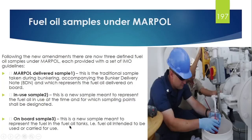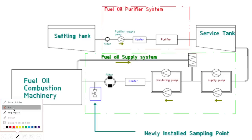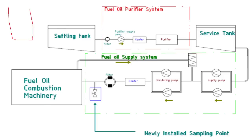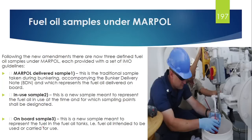Now what is the on-board sample? Basically in a fuel oil tank — suppose there is a fuel oil tank — from the settling tank, you are transferring via a transfer pump to a settling tank. What type of fuel is there in this tank? There should be a sampling point from where we can take the sample and test it. This type of sample is called the on-board sample. It means the type of fuel in the fuel oil tank that will be used in the engine — if you want to take that, it is called the on-board sample.